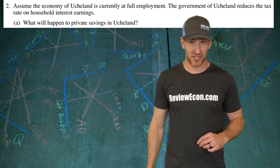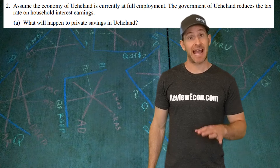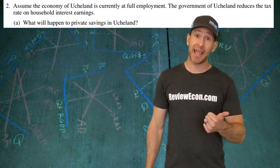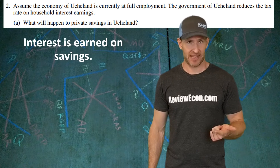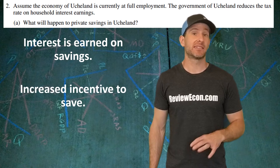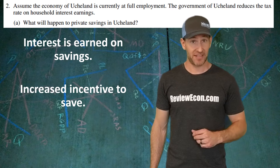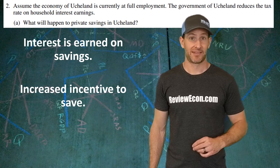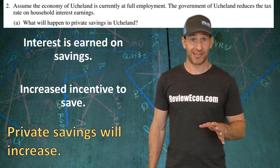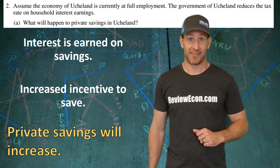This question starts off with Uche Land. They have full employment, which means they're in long-run equilibrium, and the government decides to reduce taxes on earnings from interest. Interest is what you pay when you borrow and it's what you earn when you save. By lowering taxes on the interest earned, it increases the incentive to save, which means people save more. Private savings increase and then you have your point.